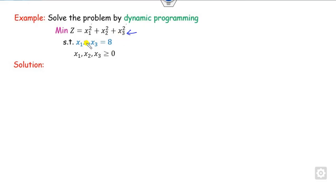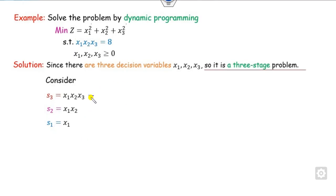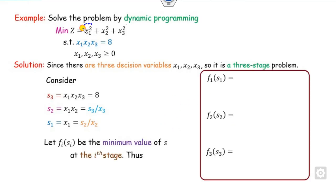Now let's look at the second example. In this case, the objective function is in additive form but the constraints are in product form. Again, it is a three-stage problem. What is s3? It is whatever the full constraint gives. What is s2? It corresponds to the variable for x1 and x2. And s1 corresponds to x1 alone. The value of s3 is 8. The value of s2 is s3 divided by x3, and s1 is s2 divided by x2, noting that x2 and x3 must be non-zero.